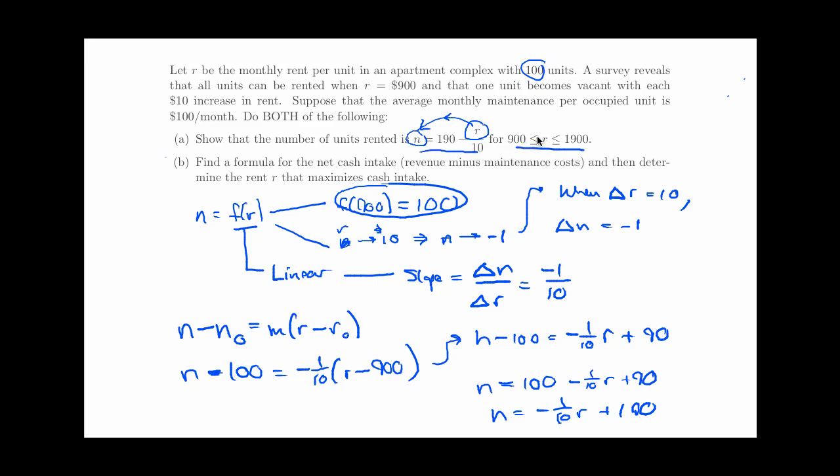And the domain here, that's given to us basically because the rent, all units are rented when R is $900, this is as low as you can go, and if you make the rent $1,900, you will find that your n is equal to zero, so that's the natural boundaries on your rent. So now we have a formula that tells us the number of units rented as a function of the rent. We're now going to clear the board here and do part B.